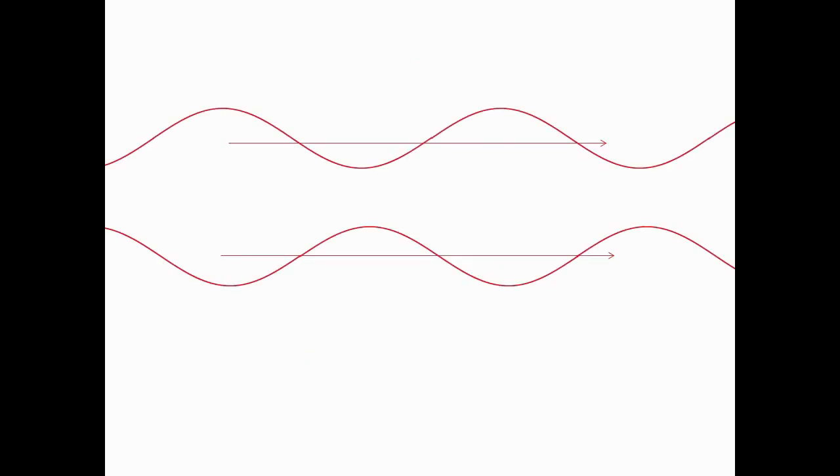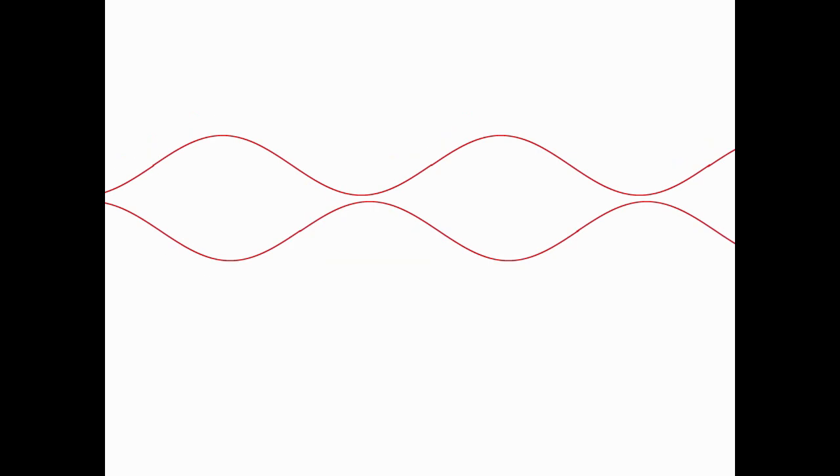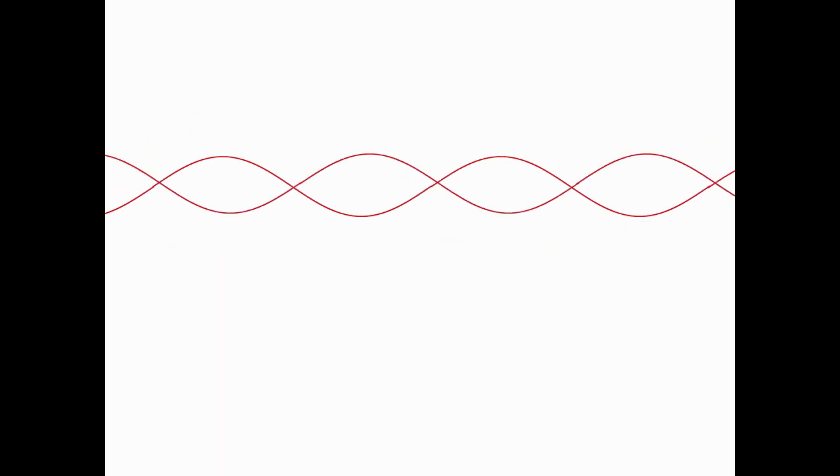When the two reflected red waves combine, they are out of phase. That is, one's peak overlaps with the other's trough. The two red waves cancel each other out. This is called destructive interference.